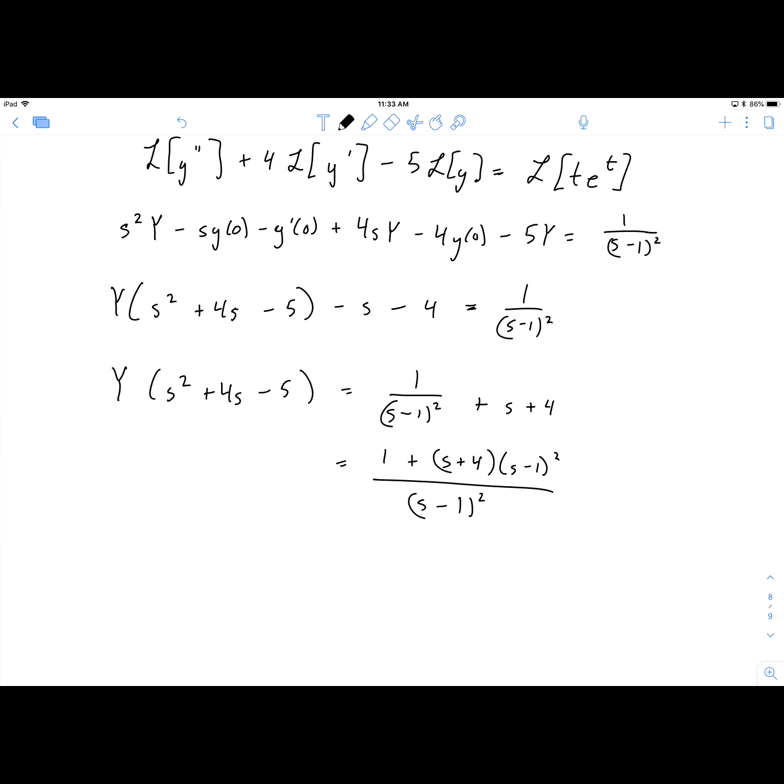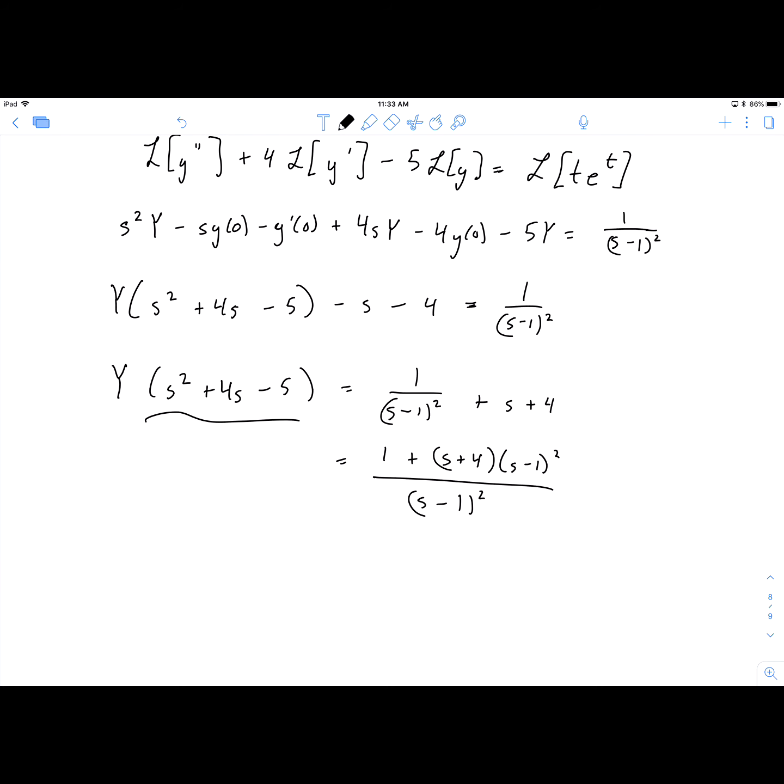And then if we are solving for Y, we're going to divide all of this by s² + 4s - 5. So that will show up on the denominator here as well. And on the left-hand side, we just have Y left.